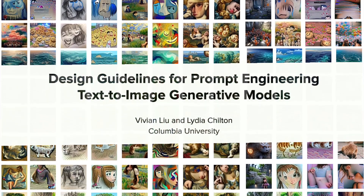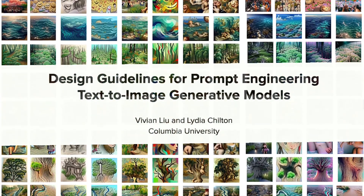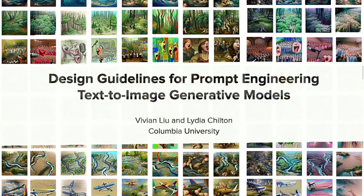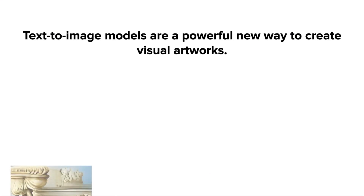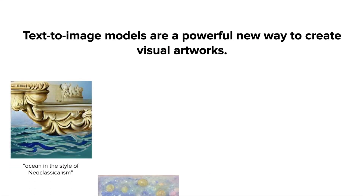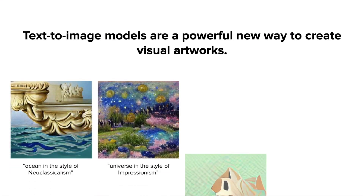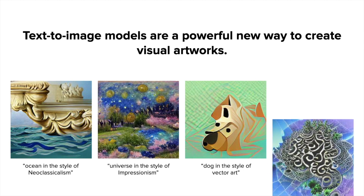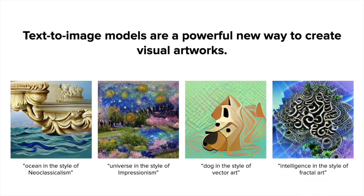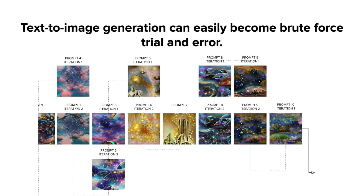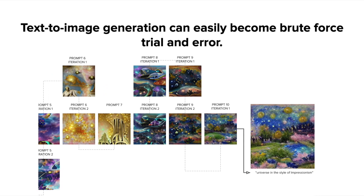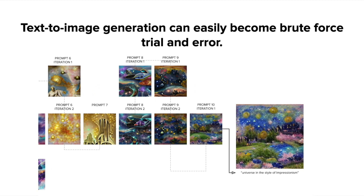Hi, my name is Vivian, and today I'm presenting a paper titled Design Guidelines for Prompt Engineering Text-to-Image Generative Models. These models are a new and powerful way to generate visual artwork. A model can simply take in a text prompt and translate it into an image. Because text is freeform and open-ended, the possibilities for image generation are endless. However, this also means that image generation can easily become a brute force, trial and error kind of design process, which can feel very random and unprincipled.